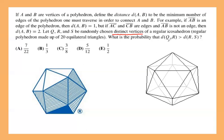The question is asking: what is the probability that the distance between Q and R is larger than the distance between R and S? Make sure you understand the question before attempting anything. We're given three different points on the vertices, but before moving on, maybe we should know how many vertices we have.